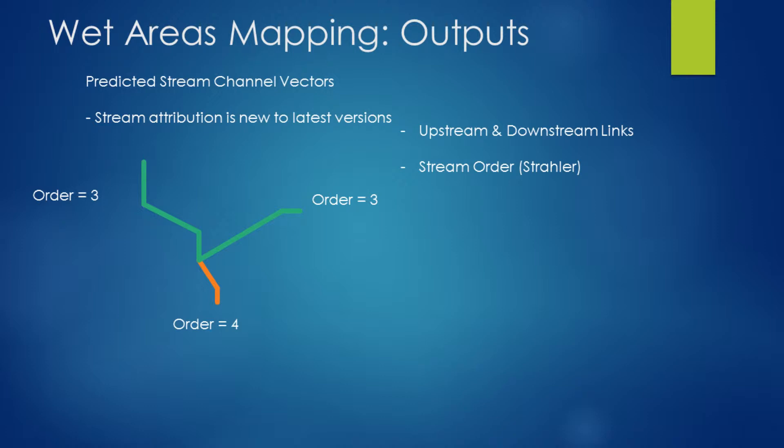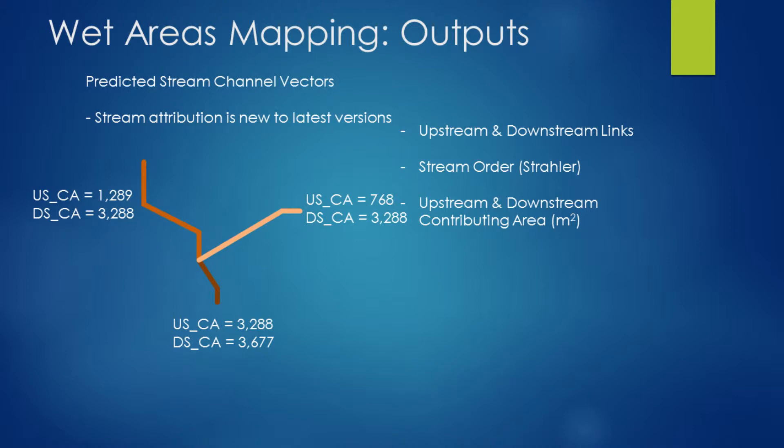From a network routing perspective, we now have identification attributes for every upstream and downstream link associated with any particular stream channel segment for every single vector line. There's also simple stream ordering using the Strahler stream ordering methodology, as well as upstream and downstream contributing area for each of these channel vectors. With that, we can start to identify the headwater potential upstream of an area as well as the distance to outlet downstream of any channel vector.